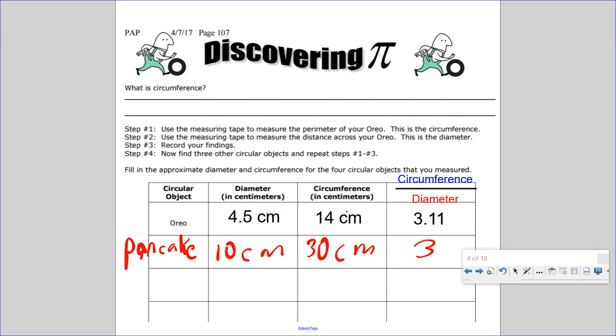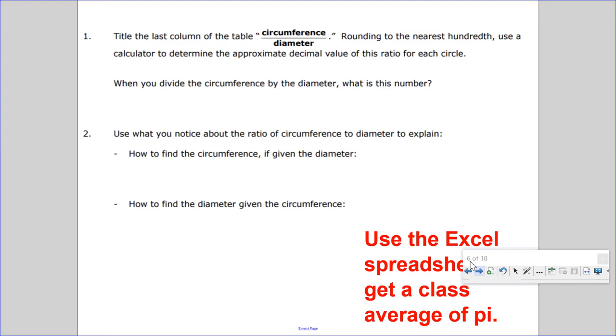Use what you know about the ratio of circumference to diameter, explain how to find the circumference if given a diameter. We know it takes 3.14 diameters to wrap around the perimeter of a circle or around a circle. So for example, if I have a pancake that has a diameter of 10, it takes one first diameter 10, second diameter 10, a third diameter 10, and then point 14. So it's 30, 31.4.